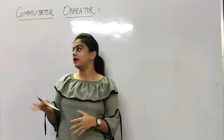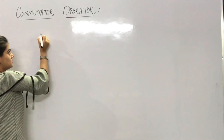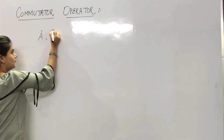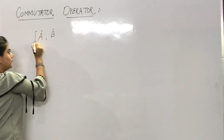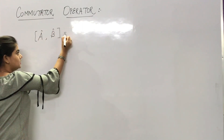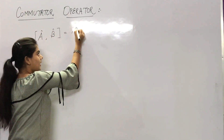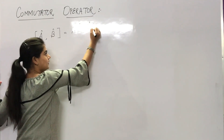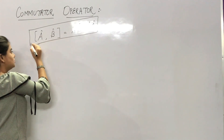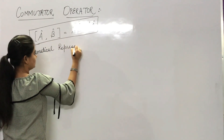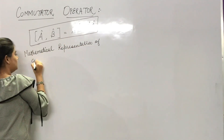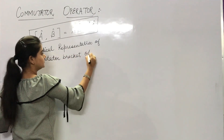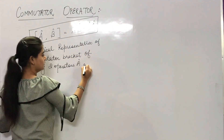Commutator operator: if we have two observables A cap and B cap, the commutator bracket of these two is equal to A cap B cap minus B cap A cap. This is the mathematical representation of the commutator bracket of any two operators A and B.